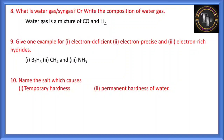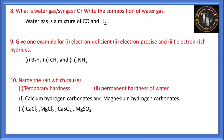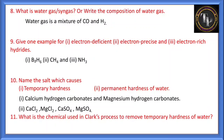Name the salts which cause temporary and permanent hardness of water. Temporary hardness is due to calcium hydrogen carbonate and magnesium hydrogen carbonate. Permanent hardness is due to calcium chloride, magnesium chloride, calcium sulfate, and magnesium sulfate. What is the chemical used in Clark's process to remove temporary hardness? It is lime — calcium hydroxide, Ca(OH)2.